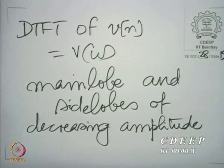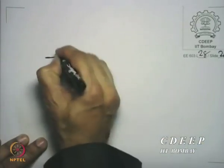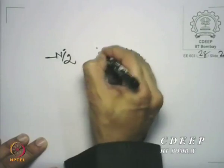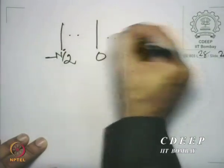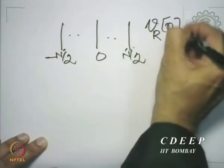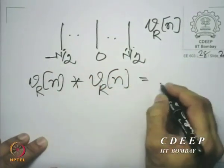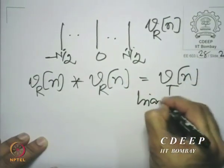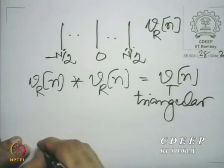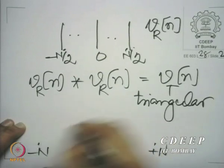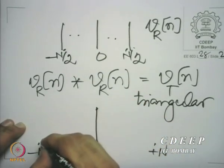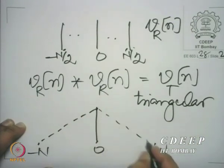Just to convince ourselves, let us see how we could obtain the discrete time Fourier transform of the triangular window. The triangular window can be obtained by convolving the rectangular window with itself. So, if you have a rectangular window between minus N/2 and plus N/2, let us call this v_r(n), r for rectangular. If we convolve v_r(n) with itself, we get v_t(n), the triangular window, which runs from minus N to plus N, going to the highest value at 0 in a triangular fashion and then dropping on either side.